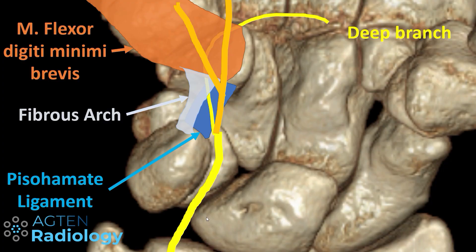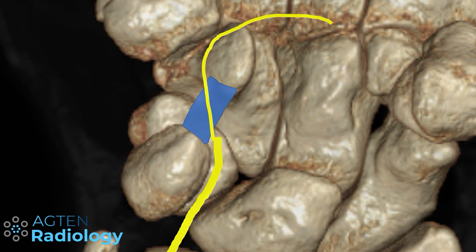If the question is for a deep branch, superficial branch, or combined ulnar nerve pathology — like distal ulnar nerve neuropathy — you have to go through all these branches to see whether there is something obvious. The deep branch, once passing on the ulnar aspect of the hook of the hamate, courses radially into the depth of the wrist, with a corresponding artery branch running along it, below the flexor digiti minimi brevis muscle. On a coronal view you can see the hook of the hamate and the pisiform with the pisohamate ligament, which is sometimes better visible on sagittal.